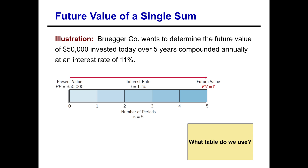Next, is it a lump sum? Are we investing one amount, or investing the same amount over multiple years? In this situation we're investing a one-time amount of $50,000, so that makes this a single or lump sum problem. We're going to need our future value of a lump sum table.